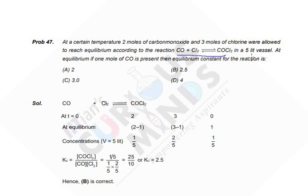CO plus Cl2 gives COCl2 in a 5 liter vessel, and its volume is also given, 5 liter. Now at equilibrium, if 1 mole of CO is present, then equilibrium constant for the reaction is...